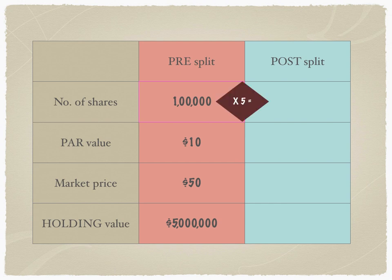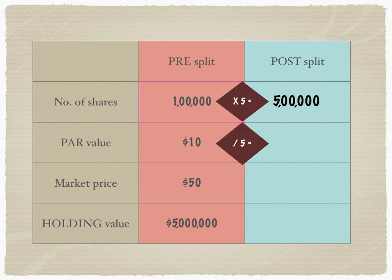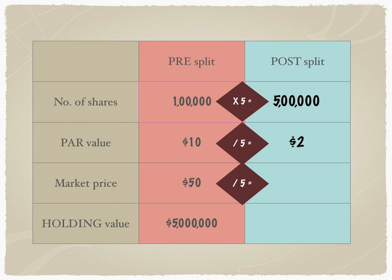Let's now calculate the post-split holding. The par value is reduced from ten to two, and the number of shares is multiplied because they've announced a five-to-one split — that means for every one share they have, they will get four additional shares. The post-split holding would therefore be five hundred thousand shares. The par value is reduced from ten to two, the market price corrects for this and falls from fifty dollars to ten dollars — that is fifty dollars divided by five.